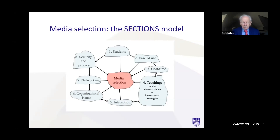Fifth is interaction — to what extent does the medium allow interaction between instructor and student, and between students? Sixth is organisational issues — do you have support for using the technology? Seventh is networking — does this technology allow you to widen networks and include more people in teaching and learning? Eighth is security and privacy — is the technology secure and does it protect students' privacy? This is not really a step-by-step analysis; it's more of an intuitive set of questions to ask before deciding whether to use a particular technology.